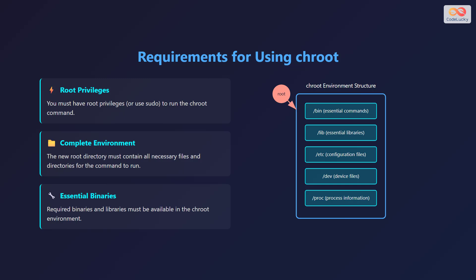Before you can use chroot, there are a few requirements to keep in mind. First, you must have root privileges or use sudo to run the chroot command. Second, the new root directory must contain all the necessary files and directories for the command to run. Third, required binaries and libraries must be available in the chroot environment — it needs its own /bin, /lib, and other essential directories.